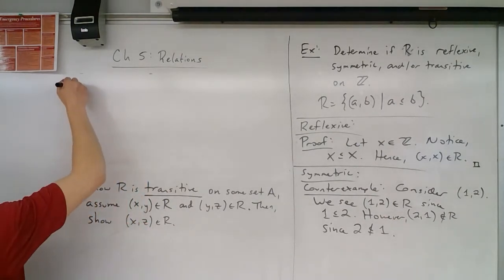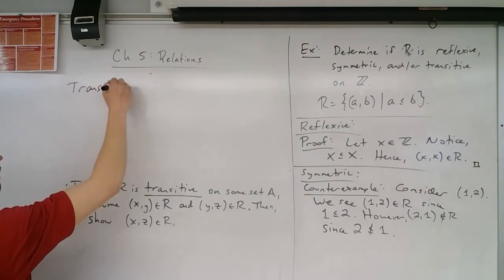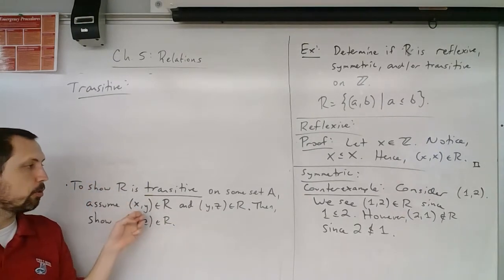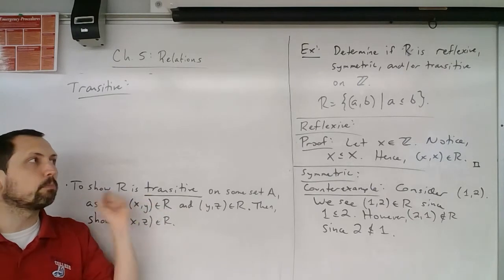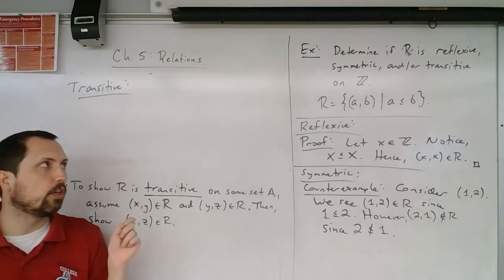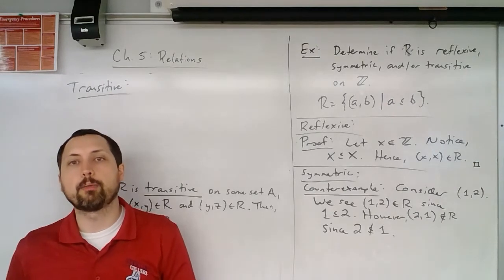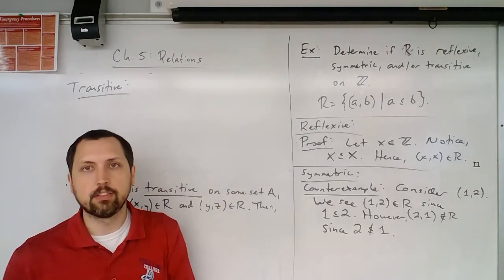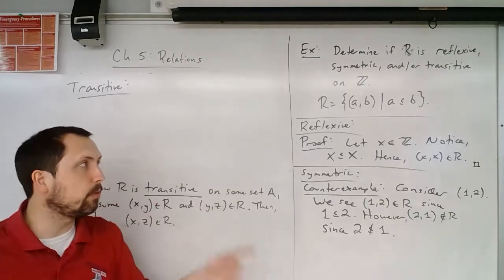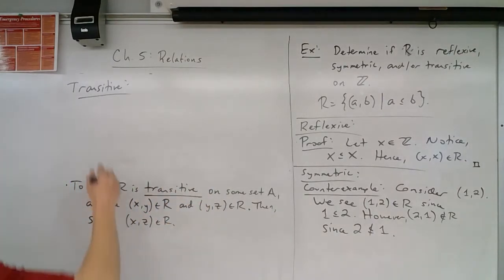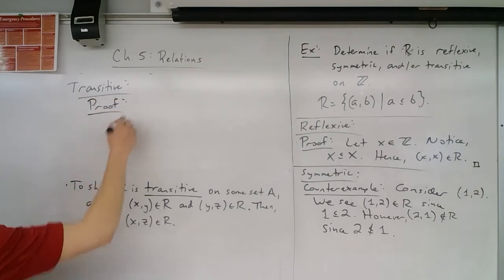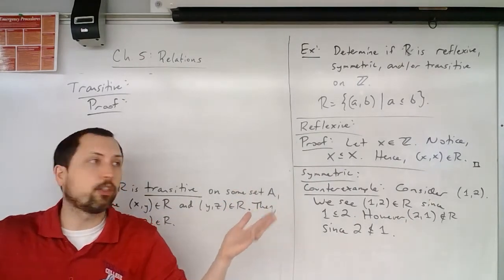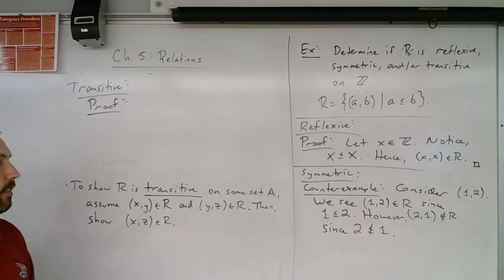For transitive, we want to assume two things: that (x, y) and (y, z) are both in R, and then show (x, z) is also in R. For instance, if 1 ≤ 5 and 5 ≤ 7, is 1 ≤ 7? Yes. So we expect this to be true, and we'll write a general proof working with arbitrary elements.